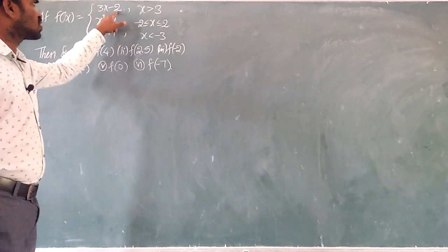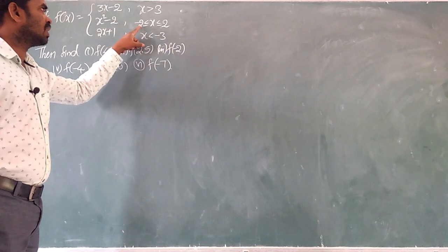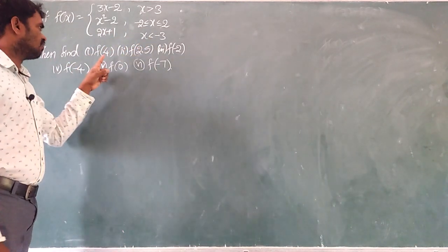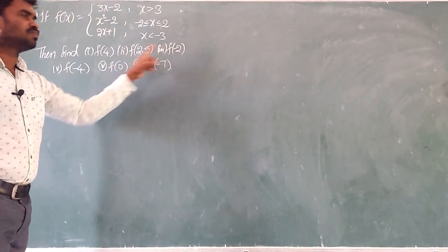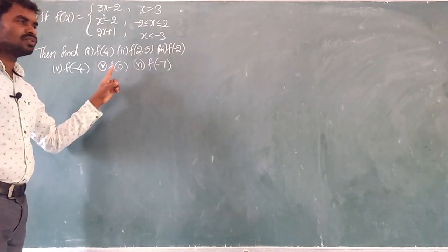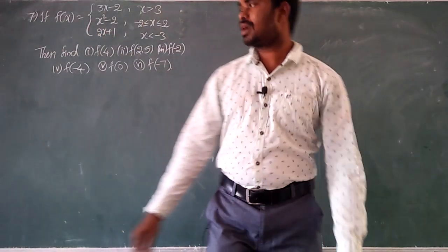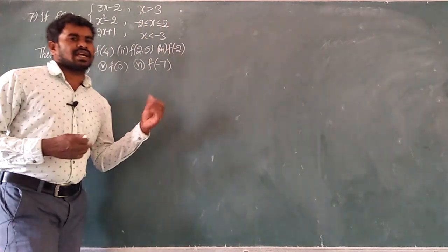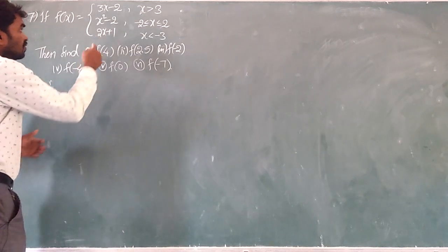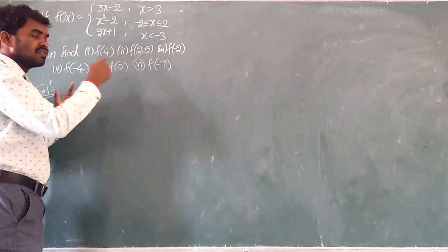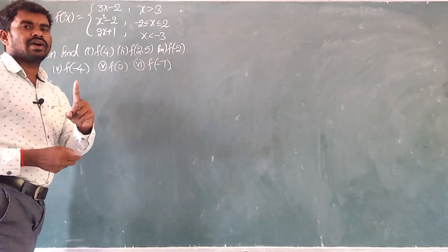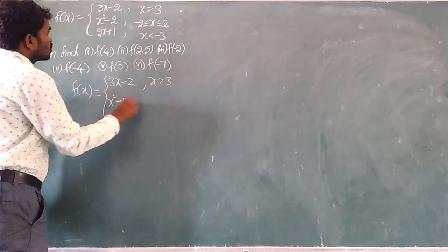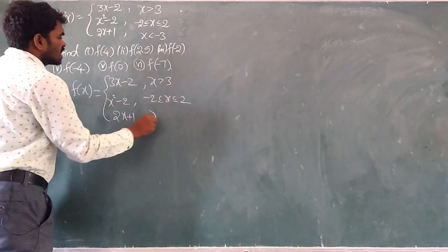What is the question? If f of x equals 3x minus 2 when x is greater than 3. If f of x equals x squared minus 2 when minus 2 less than or equal to x less than or equal to 2. If f of x equals 2x plus 1 when x is less than minus 3. Then find f of 4, f of 2.5, f of minus 2, f of minus 4, f of 0, and f of minus 7.